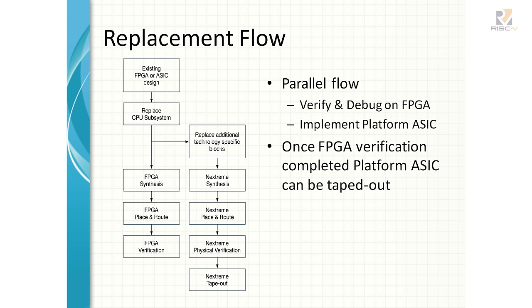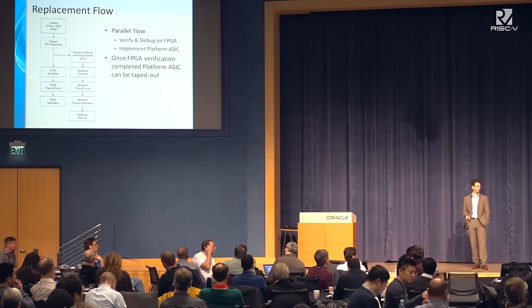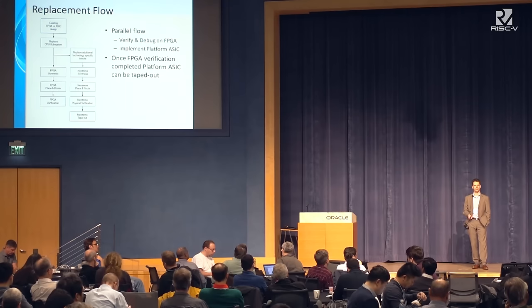The replacement flow always starts with the existing FPGA or ASIC design, working from the RTL. We replace the CPU, implement in the FPGA, and have the customer test and verify the system with the new CPU. At the same time, we replace additional technology-specific blocks — pads, PLLs — to match the target technology. Then we go into platform ASIC synthesis, which very much looks like the traditional FPGA flow: synthesis with Design Compiler, dedicated place and route tools, physical verification with Synopsys tools, and tape-out. The typical timeline from engagement to shipping silicon to the customer is about six months — a really fast turnaround for ASIC.